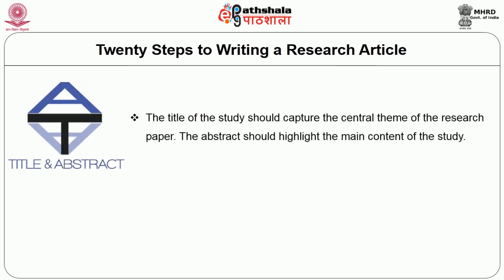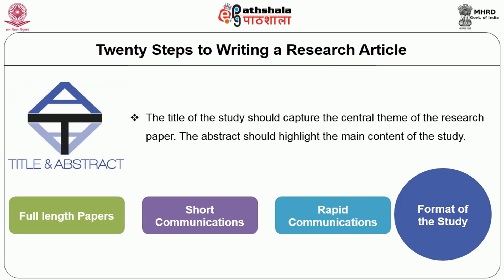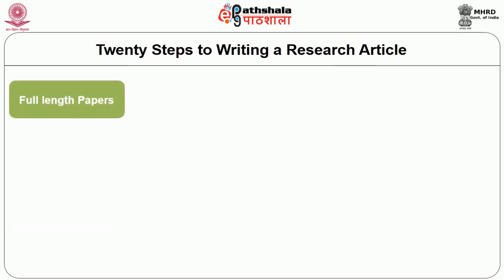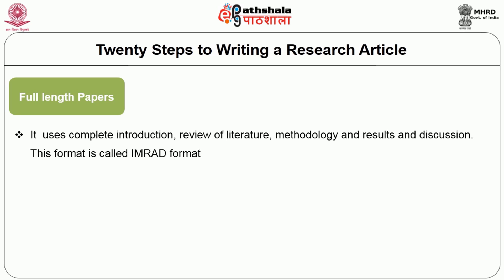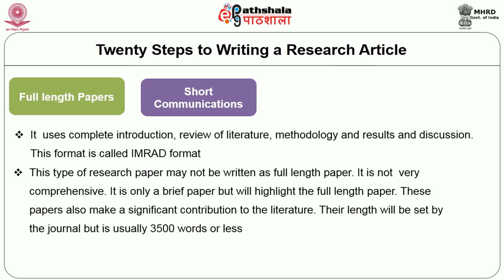Step 4: Decide the title and abstract. The title should capture the central theme of the research paper, and the abstract should highlight the main content. Step 5: Decide the format. There are three basic formats for peer-reviewed research papers: full-length papers using the IMRAD format; short communications, which are brief papers of usually 3,500 words or less, containing up to two tables and figures, making a significant contribution to the literature.